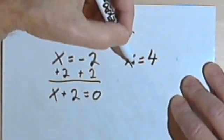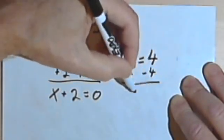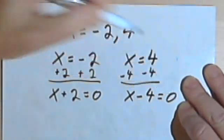And on the right side, where I have x equals 4, I could subtract 4, and I would have x minus 4 equals 0.